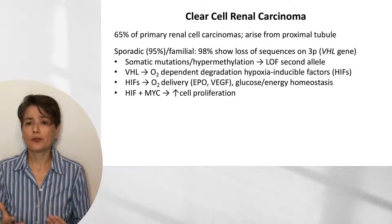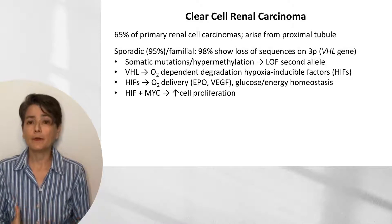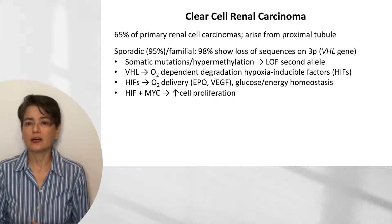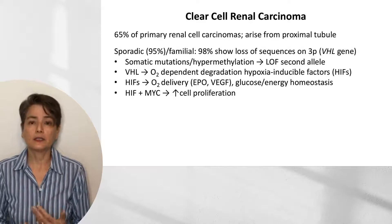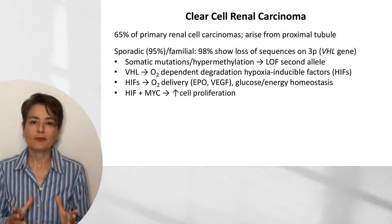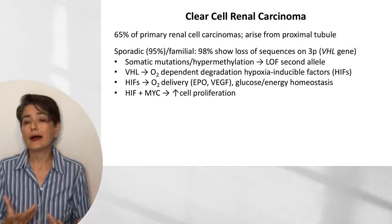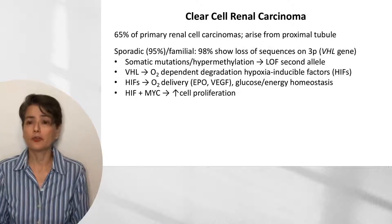Let's focus on our three types of renal cell carcinoma, beginning with clear cell renal cell carcinoma — the most common, thought to arise from the proximal tubule. We know a fair amount about its pathogenesis because it is associated with the familial syndrome von Hippel-Lindau. Despite familial cases, about 95% are sporadic. Combining sporadic and familial, about 98% of these tumors show loss of sequences on the short arm of chromosome 3, or 3p, where the VHL gene resides.